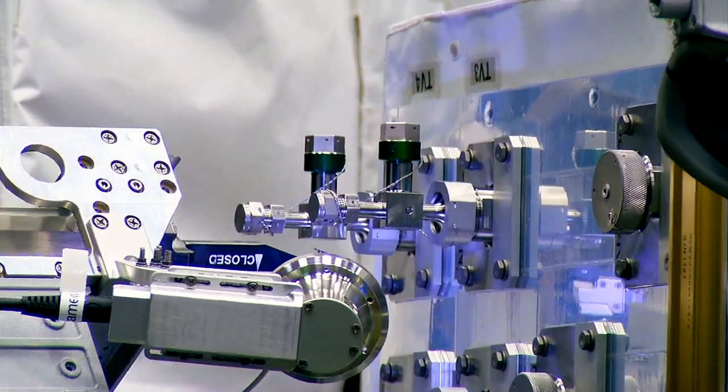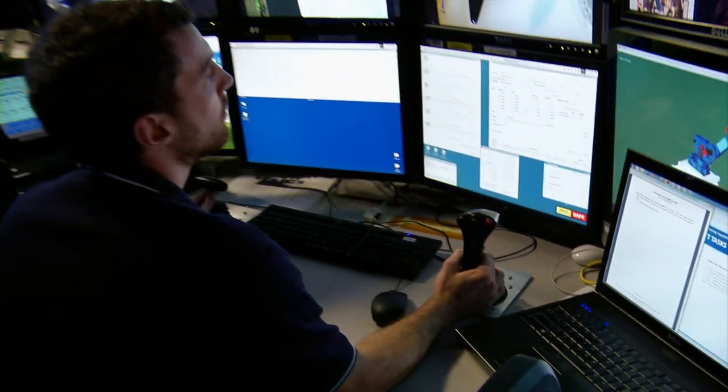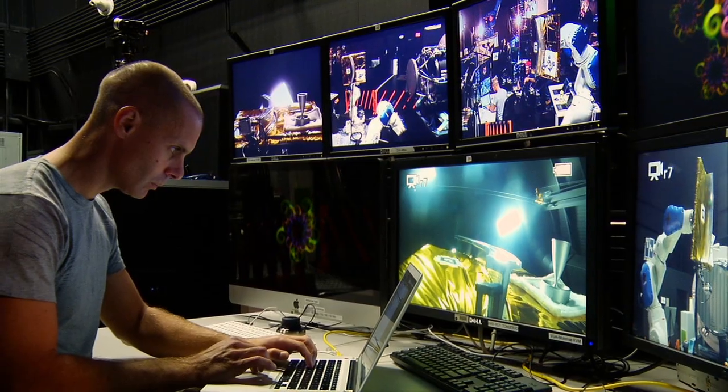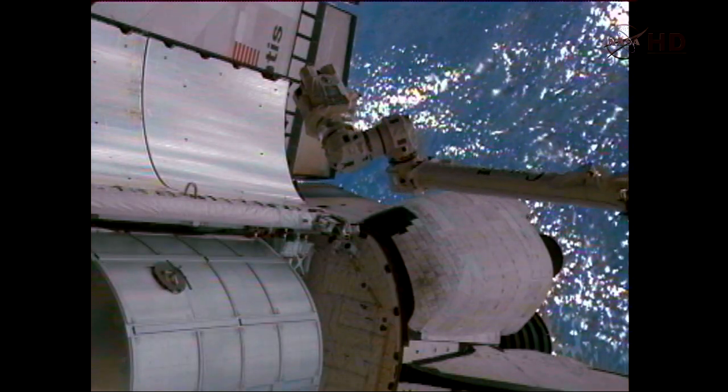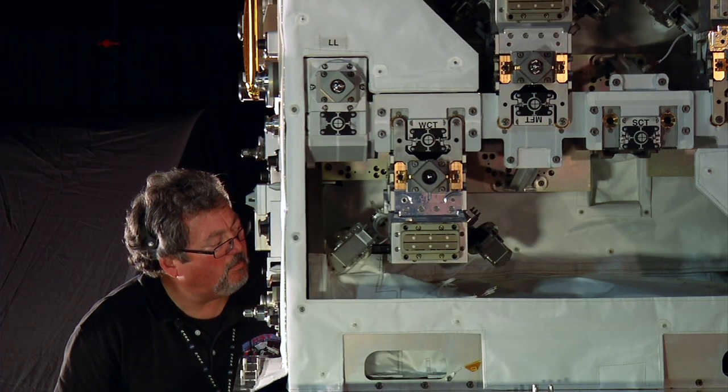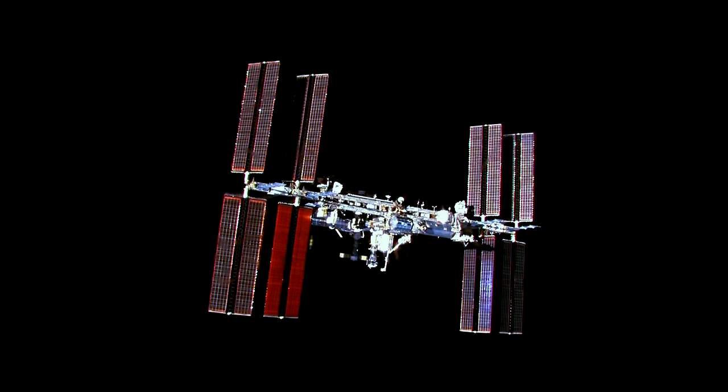When a robot arm clips a wire this fall, it'll be one small snip for robots, one giant leap in the business of space-based satellite servicing. The last space shuttle flight delivered hardware looking a lot like this right to International Space Station.